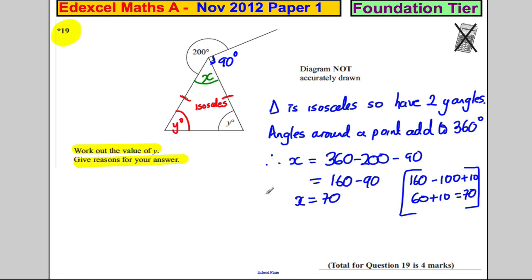And now, why? Well, we know that two lots of Y, this Y and this Y. Y plus Y is 2Y. Two lots of Y would be equal to 180 take away 70 because angles in